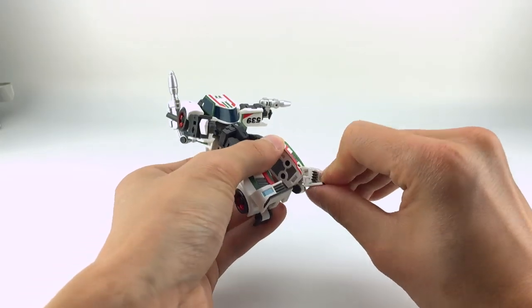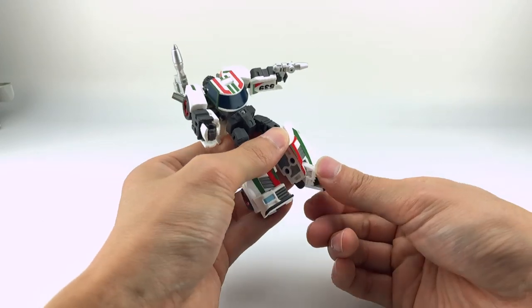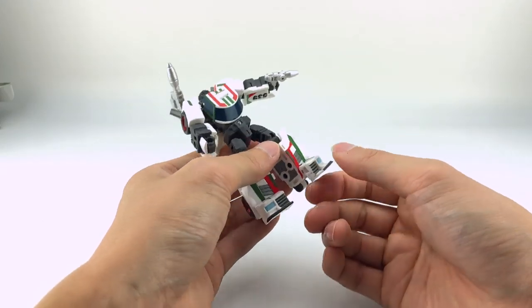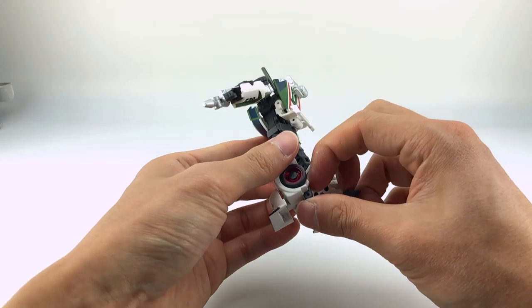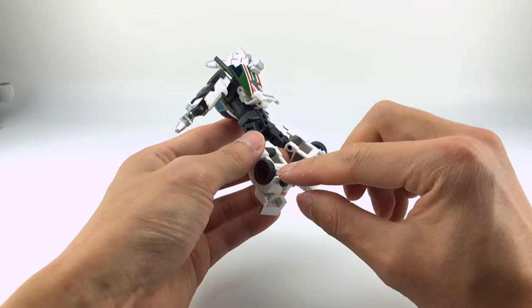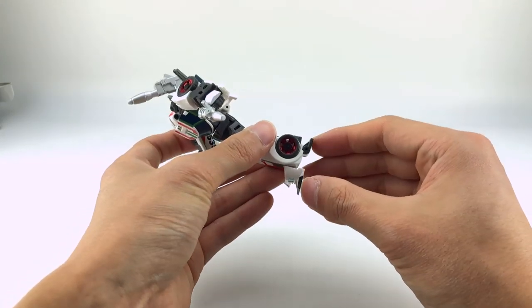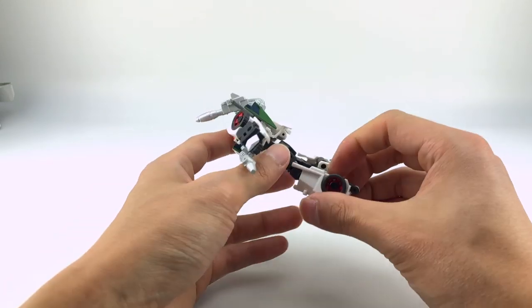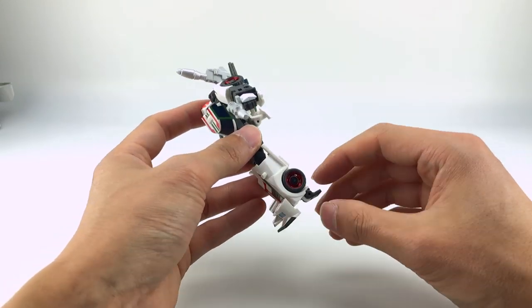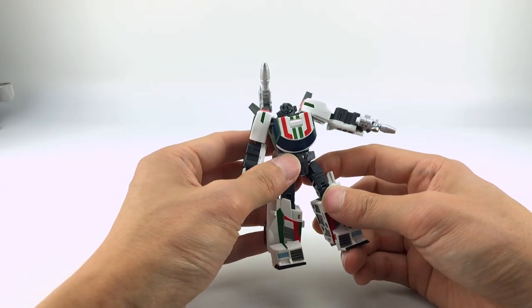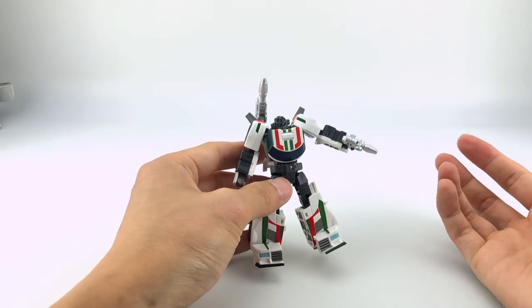He has toe tilt, and up forward and back, because he's on a mushroom peg here, and then he has heel articulation back here. His feet are pretty big, so I don't know that you completely need those, but it's nice that you have that option. And I think that's it for articulation.